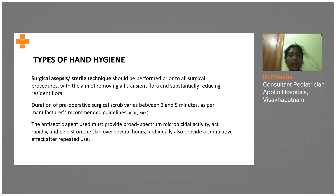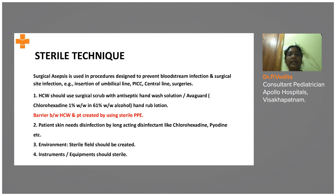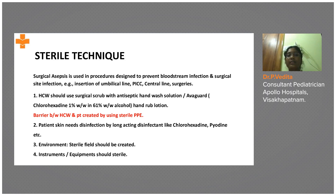Where do we use sterile technique in an ICU? We use it when inserting central lines such as umbilical lines, PICC lines, any arterial lines, small surgeries, or exchange transfusions. These are all sterile techniques in an ICU. The agent used is chlorhexidine with 61% alcohol — this is the guideline.